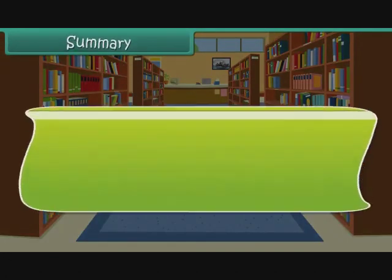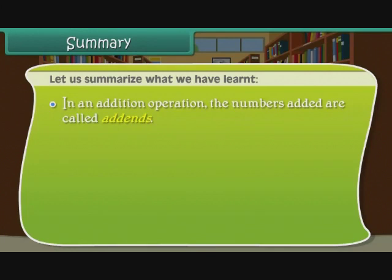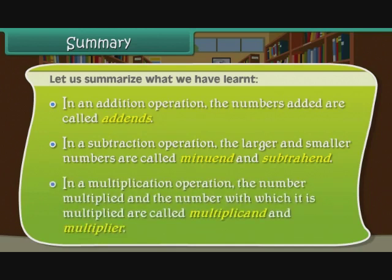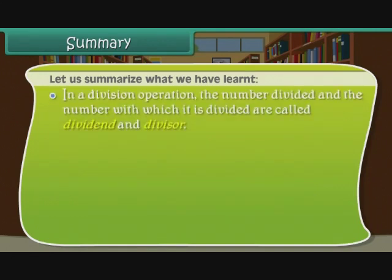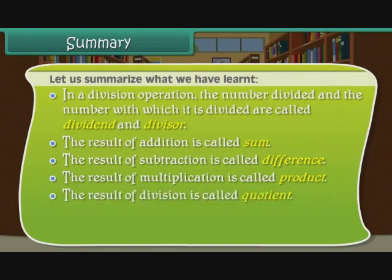Let us summarize what we have learnt. In an addition operation, the numbers added are called addends. In a subtraction operation, the larger and smaller numbers are called minuend and subtrahend. In a multiplication operation, the numbers are called multiplicand and multiplier. In a division operation, the numbers are called dividend and divisor. The results are called sum, difference, product, and quotient respectively. 0 is called the additive identity, and 1 is called the multiplicative identity.